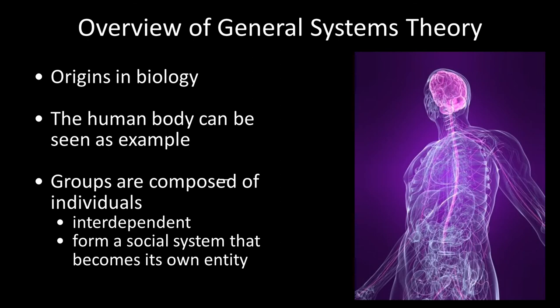When we talk about groups, we think of groups being composed of smaller pieces, specifically individuals. We talk about these individuals being interdependent on one another. Interdependence is a type of mutual dependence upon one another. There is influencing of one another that takes place, as well as a need and importance of one another. Groups come together to form the social system that eventually becomes its own entity.